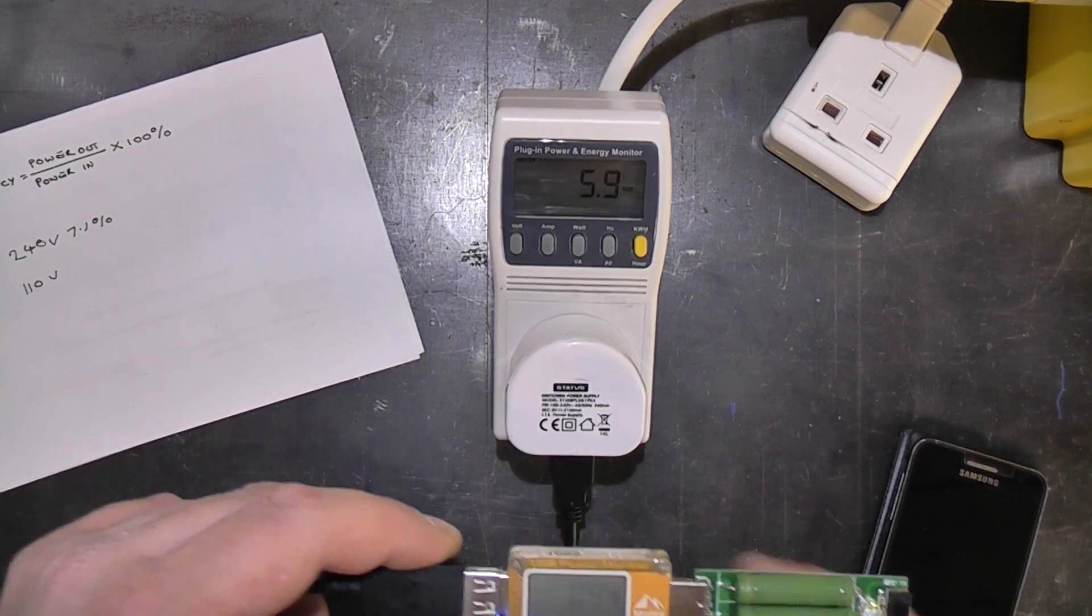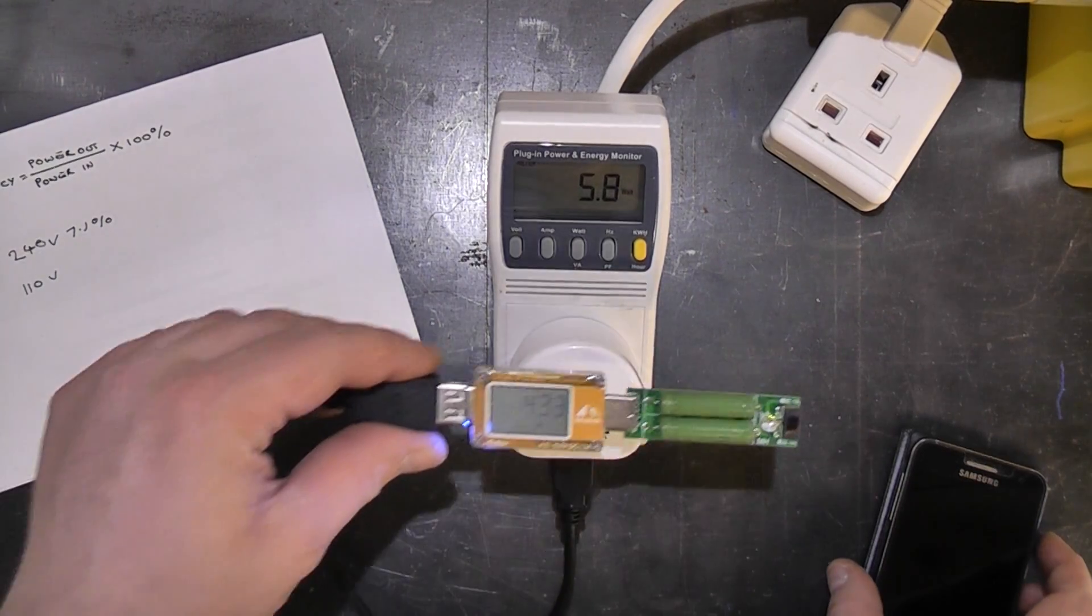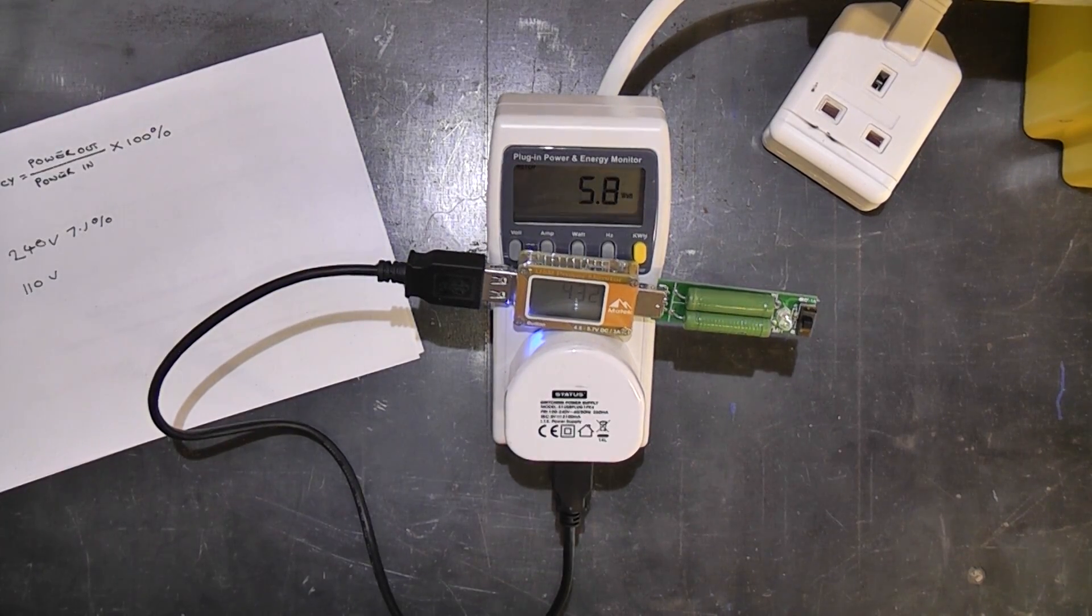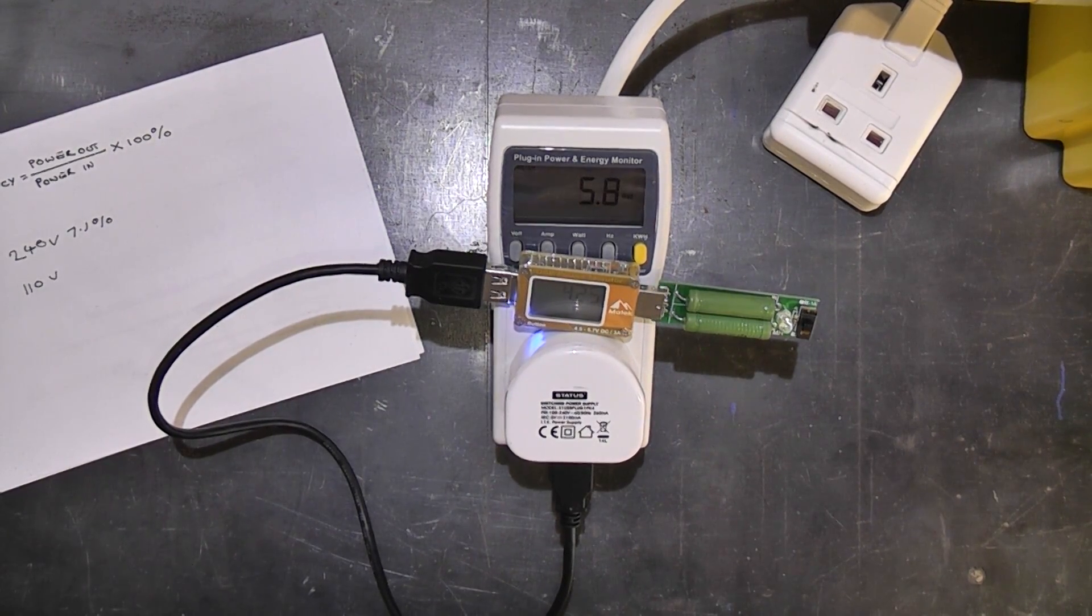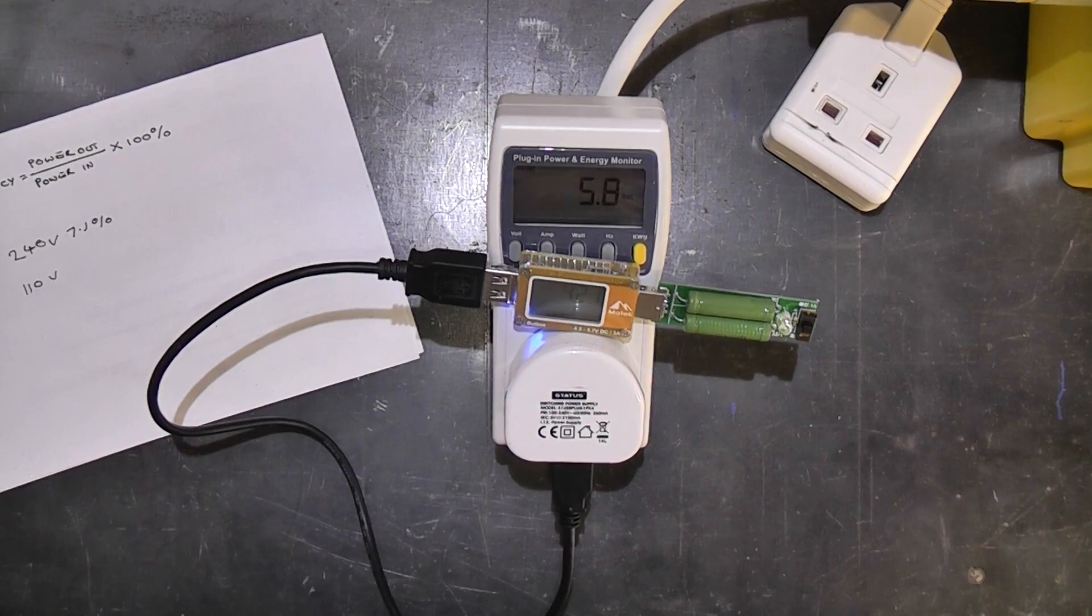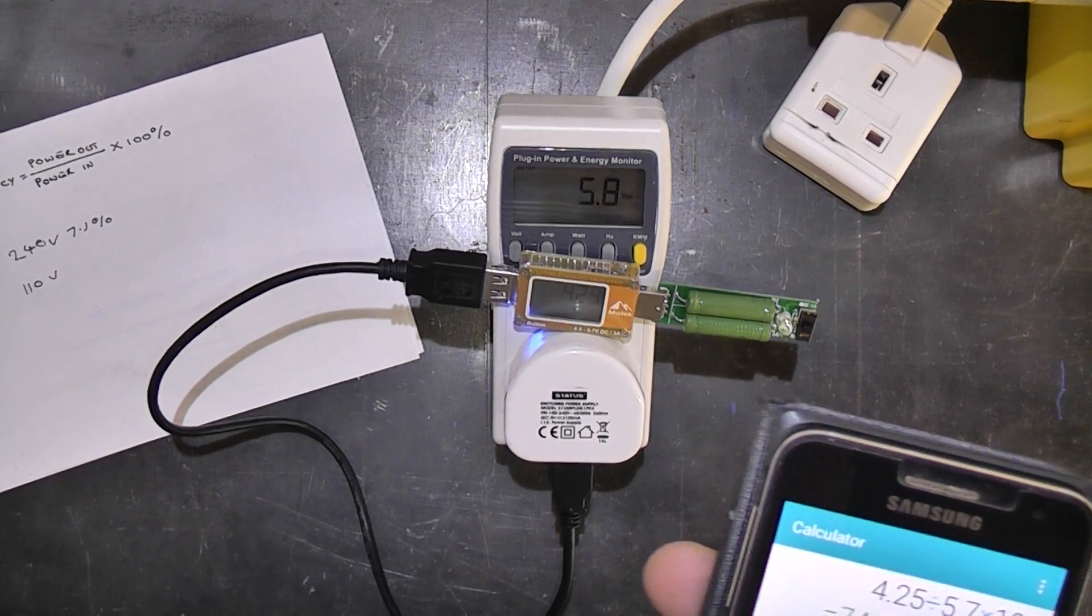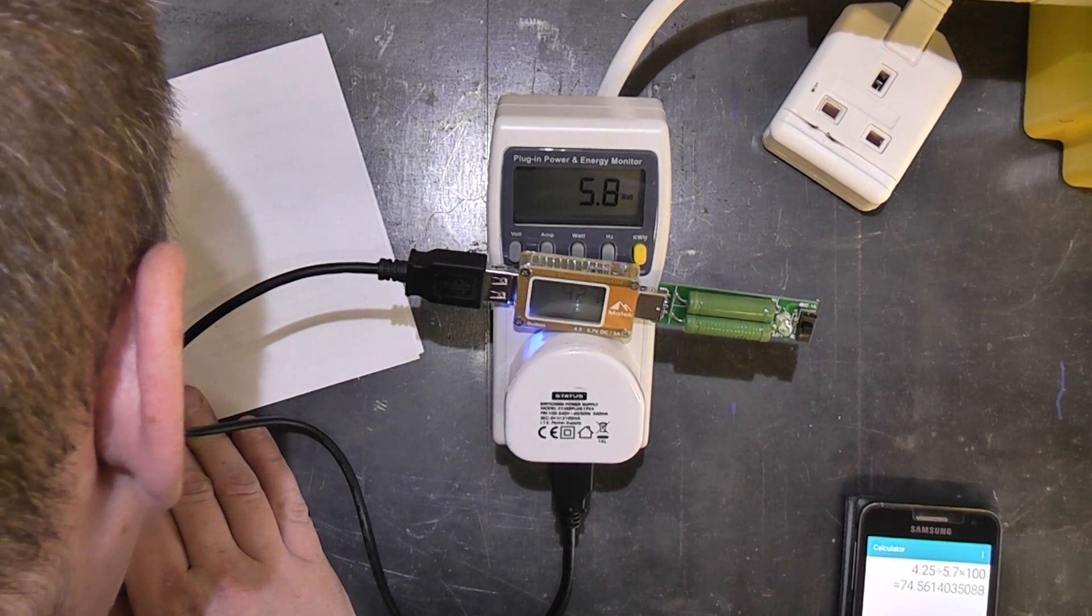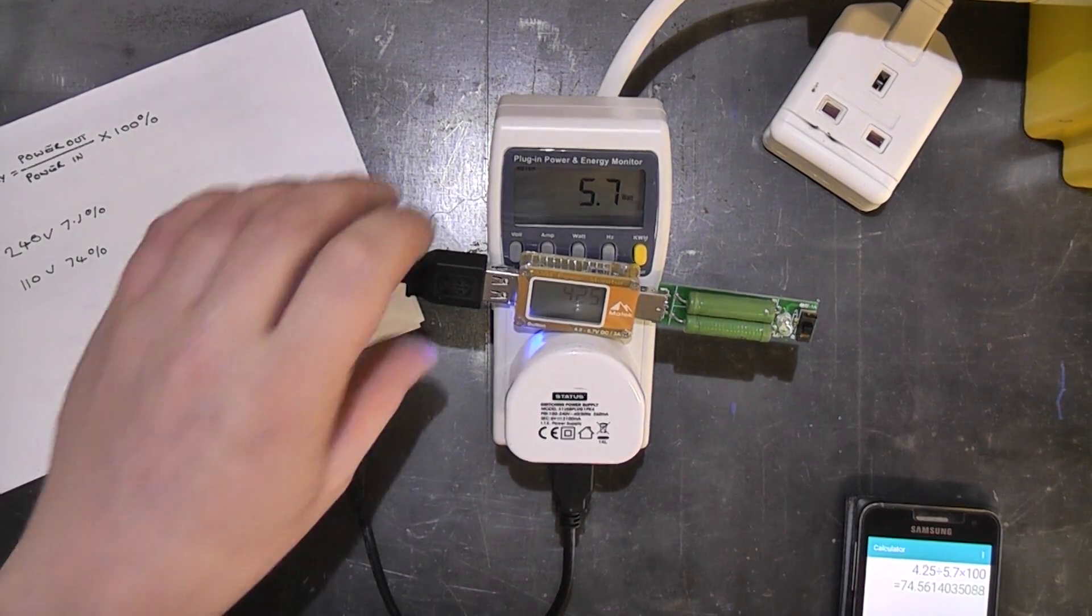5.9 watts so how many watts are we getting on the output? So it's virtually the same. Let's do the math again. So what was it? 4.25 divided by 5.7 times 100. It's 74 percent. It's actually a tiny bit more efficient on 110 volts than it is on 240.